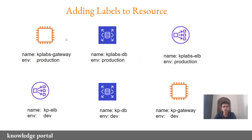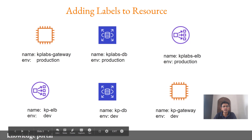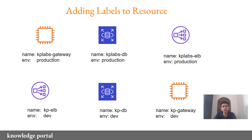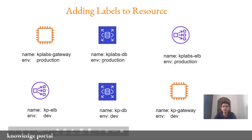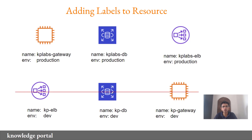In a second example, what we have done is we have added a label to each and every resource. So the first server has a label where the key is 'name' and the value is 'kplabs-gateway', and it also has a second label where the environment is 'production'. The second resource has a label where name is 'kplabs-db' and environment is 'production'. Similarly, in the second environment the name is 'kp-db' and the environment is 'dev'. From these labels you can quickly find out that the lower three resources belong to the dev environment and you can go ahead and stop all of them right away.